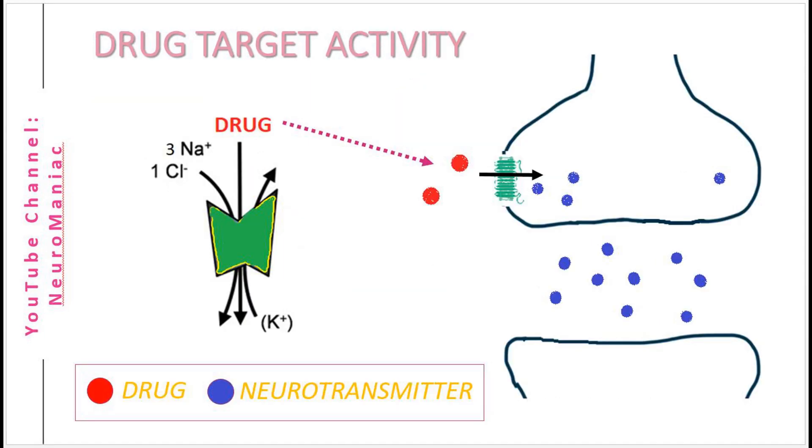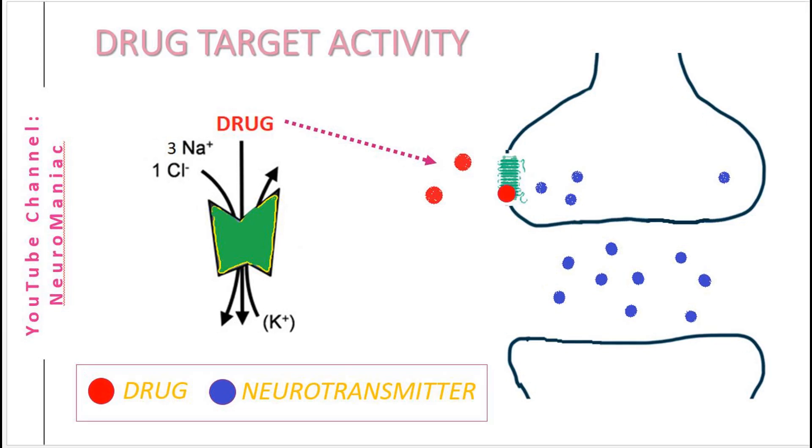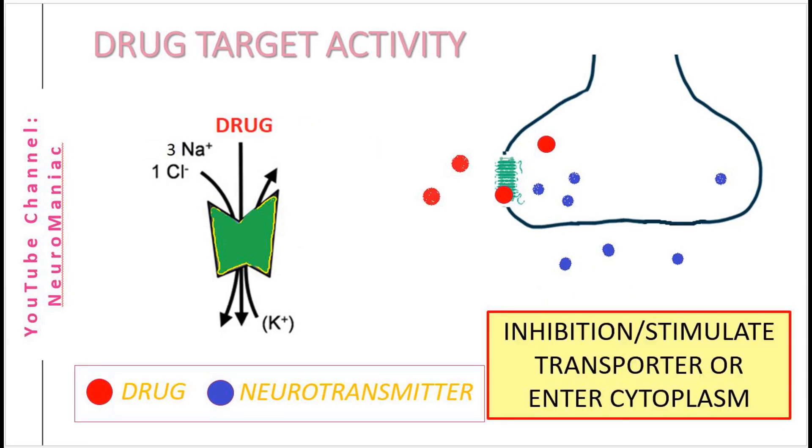Although the reuptake transporters have affinity for the respective neurotransmitter, there is capacity for other molecules to bind and alter the activity of the neuron. As a result, researchers have exploited this hitchhiking process to develop drugs that can treat specific diseases.